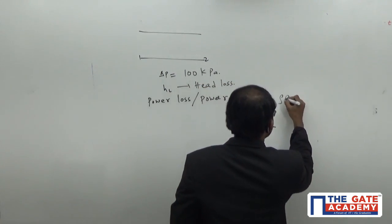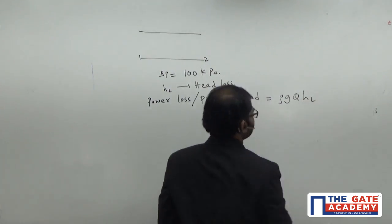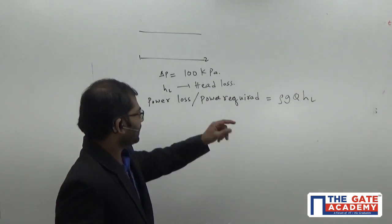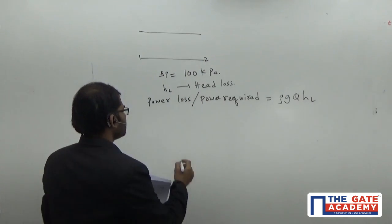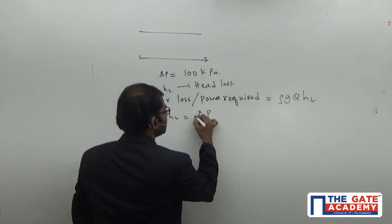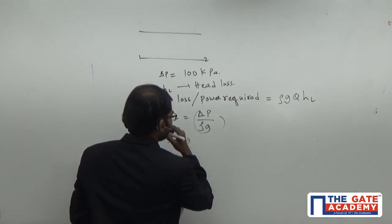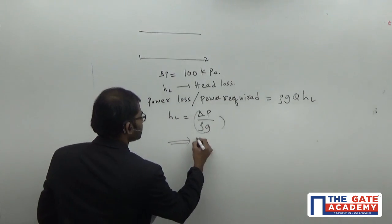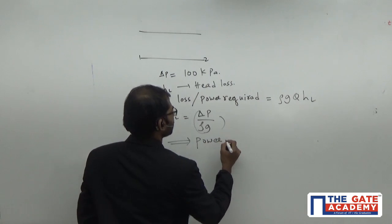So it will come as rho G Q H_L. So we have to get these values here. H_L you can easily get it here. So we know H_L is equal to given by delta P by rho G. So this implies H_L is equal to this value here. This implies power loss, or what are the answer we're going to get here, power required will come as Q into delta P.